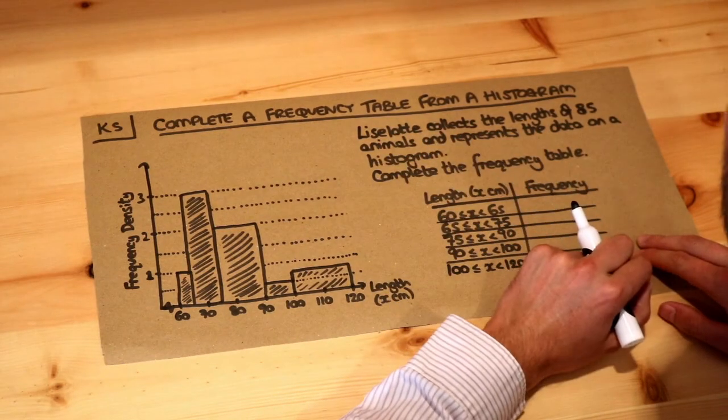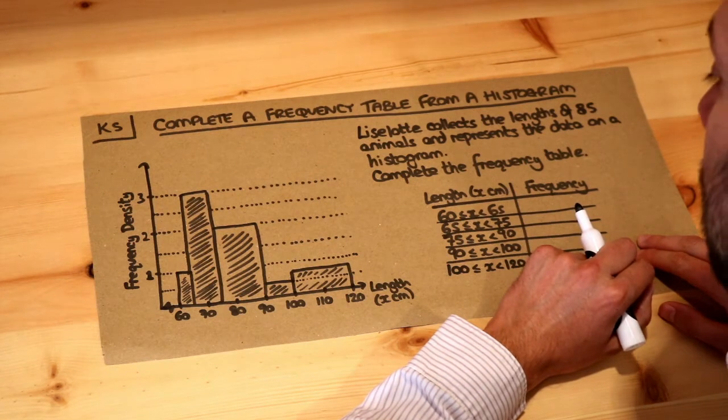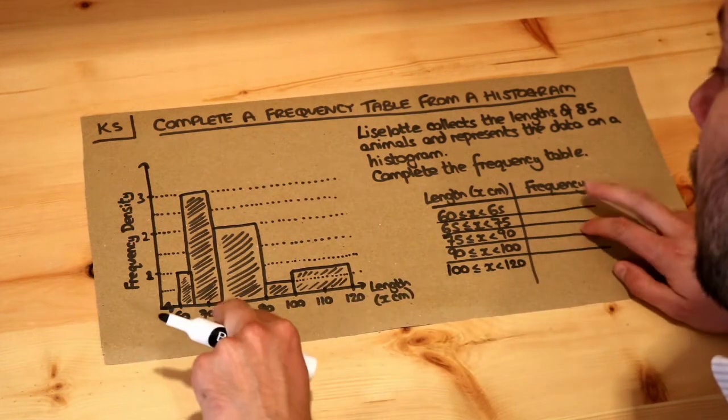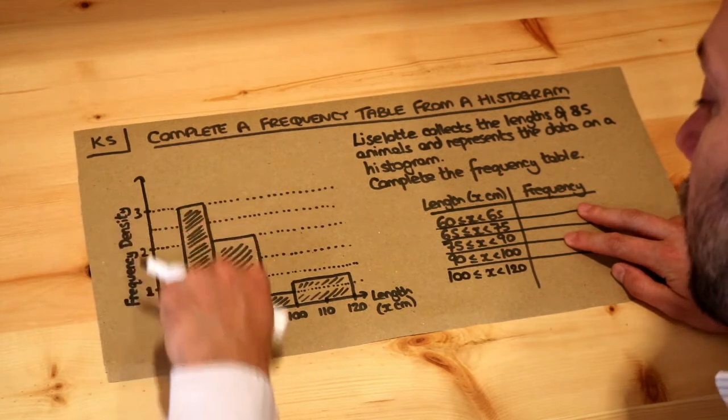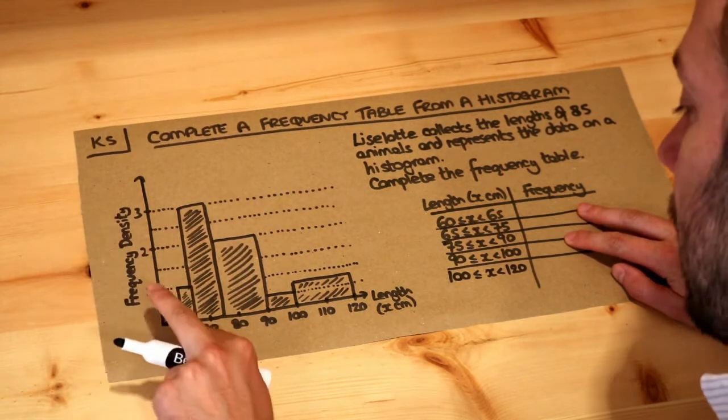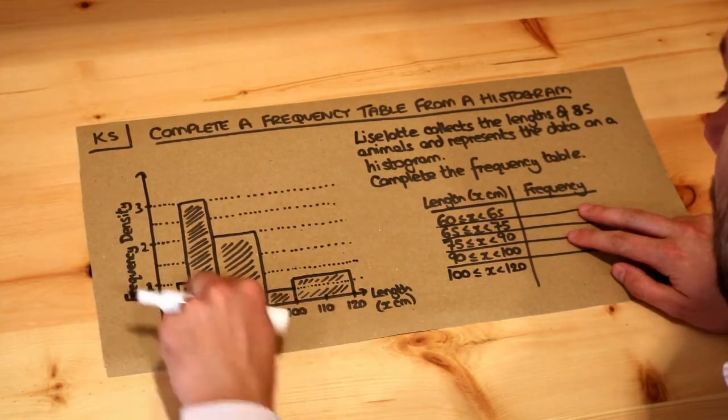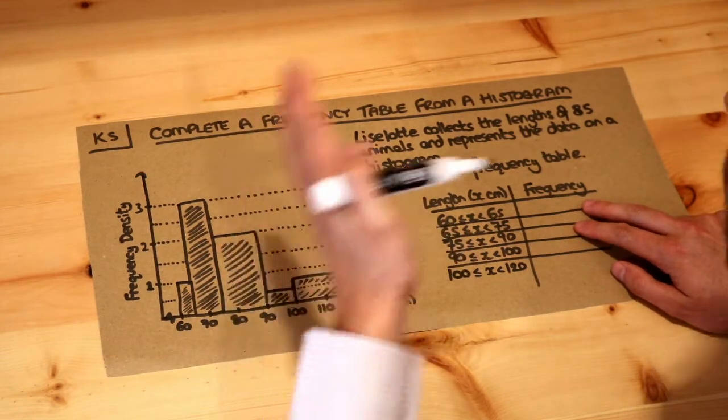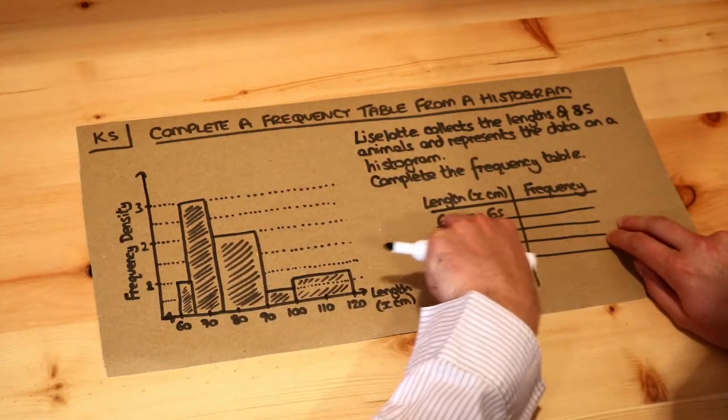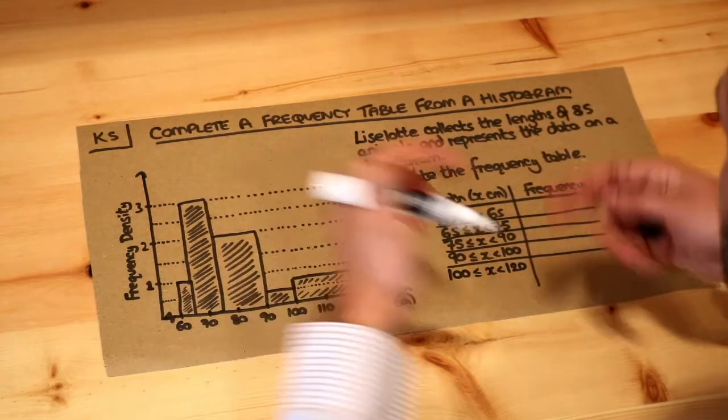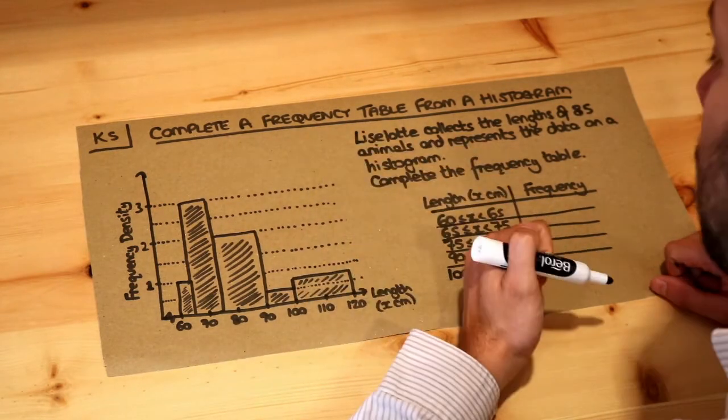Lilo collects the length of 85 animals and represents the data on a histogram. What this is saying is that the lengths of animals are most concentrated between 65 and 75 centimeters. It's almost like a bar chart, but it's fair because even though we have different intervals, it's taking into account those widths of different intervals, which we saw in the previous video.